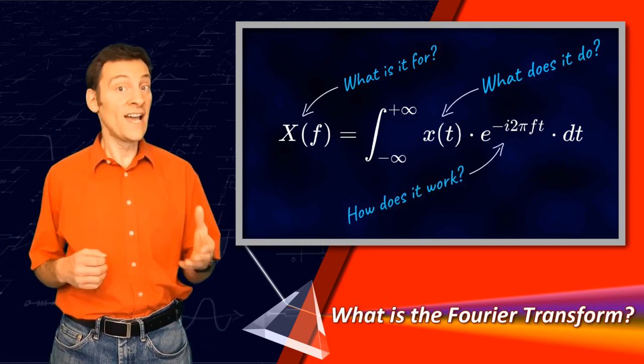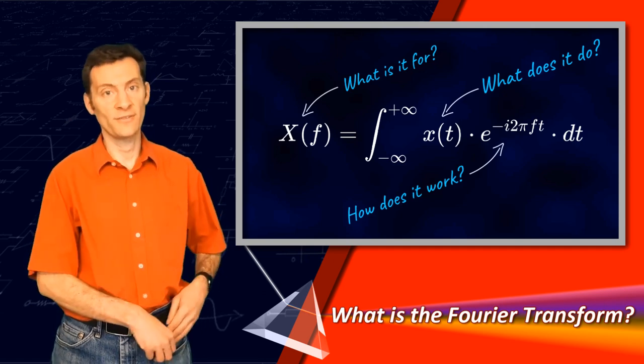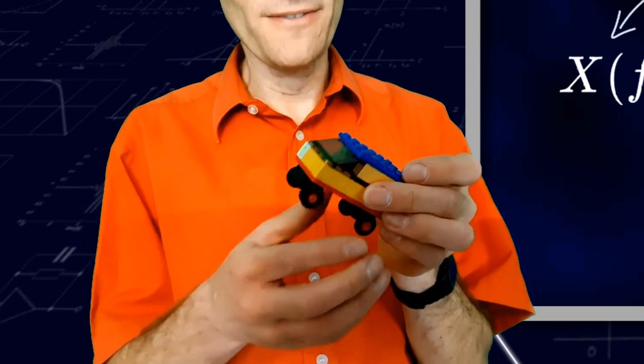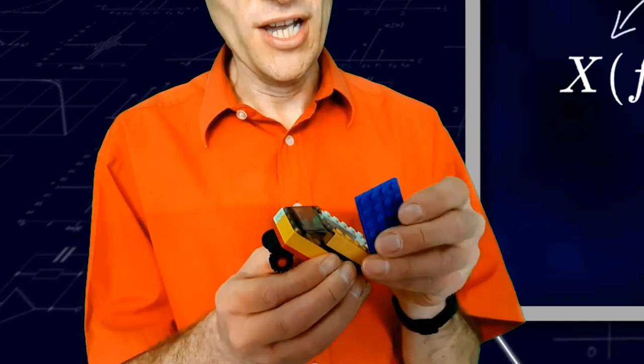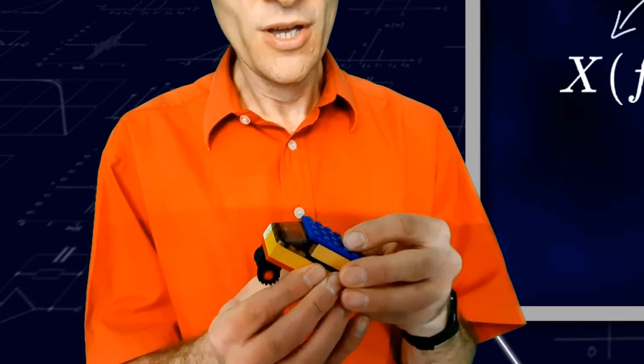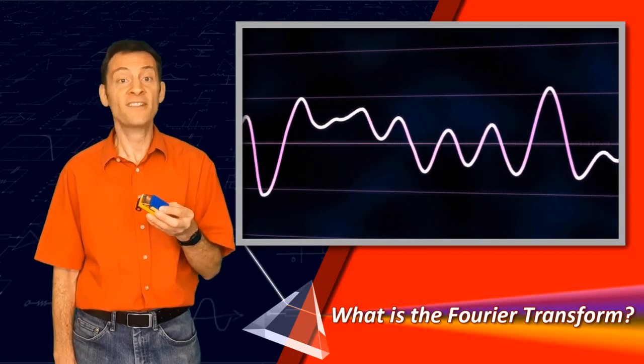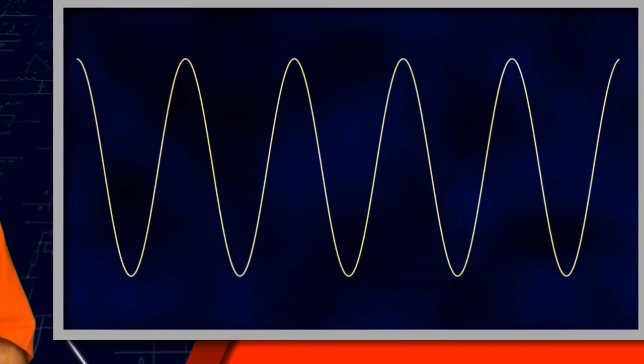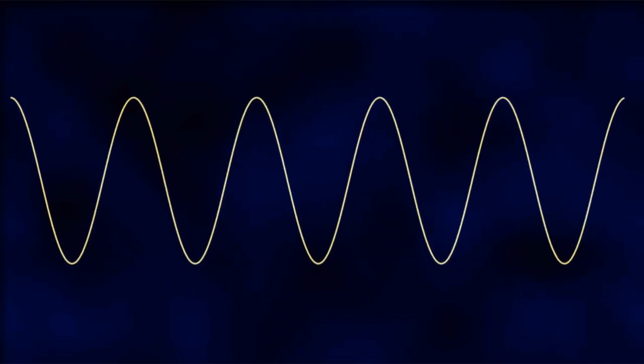We use the Fourier transform to tell us what a signal is made out of. Just as this car can be built out of individual Lego bricks, each brick with its color, its shape and its position within the car, so signals can be built out of individual sinusoids with properties like their frequency, amplitude, and position in the signal or phase.